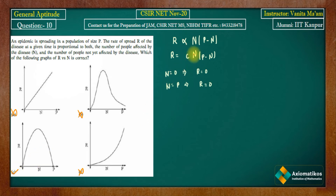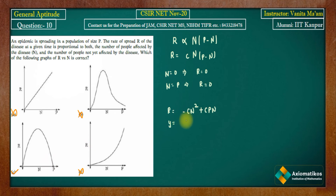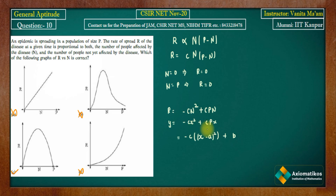The correct option is C. The equation r = c·n·(p - n) expands to r = -cn² + cpn, which is a vertically downward parabola. With r on the y-axis and n on the x-axis, this matches the standard form y = -a(x - b)² + c, confirming it is a downward-opening parabola.